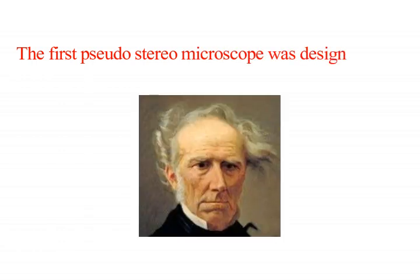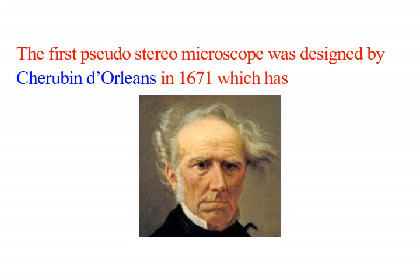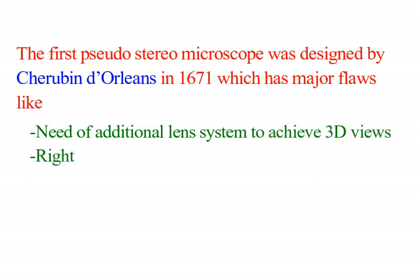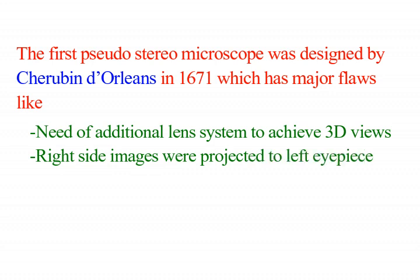The first pseudo stereomicroscope was designed by Cherubin de Aureliens in 1671, which had major flaws like the need for an additional lens system to achieve 3D views, and right side images were projected to the left eyepiece and vice versa.